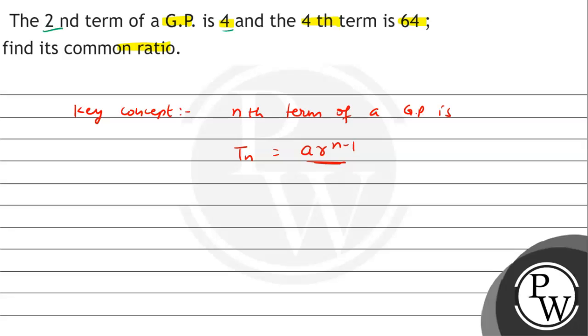Since t2 = 4, using the formula: ar^(2-1) = 4, which means ar = 4. This is equation 1. The fourth term is 64.